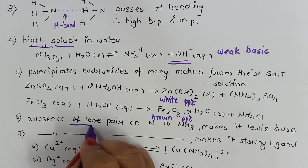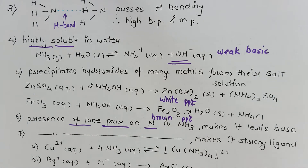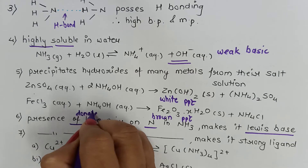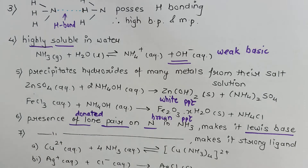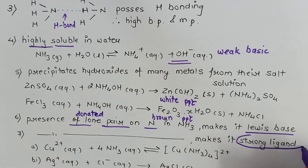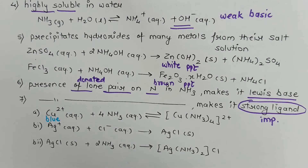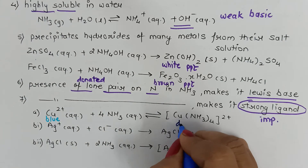The presence of a lone pair on nitrogen in ammonia makes it a Lewis base because this lone pair can be donated. This also makes ammonia a strong ligand — an important 'give reason' question: why is ammonia a strong ligand? On reaction with cupric ions, ammonia forms a deep blue colored complex.